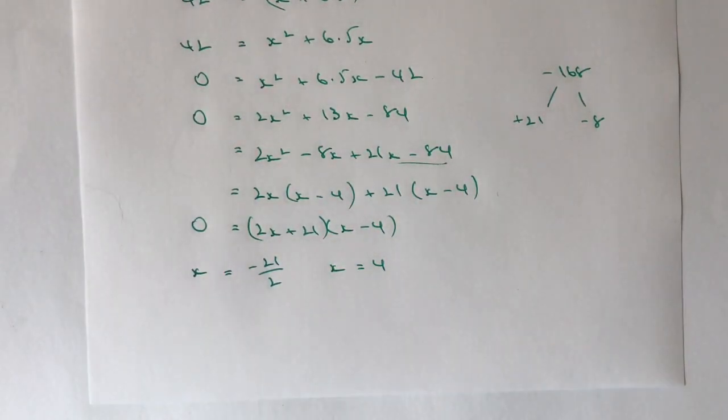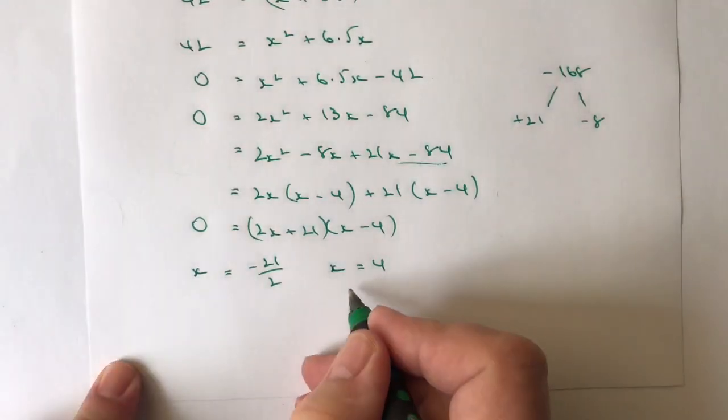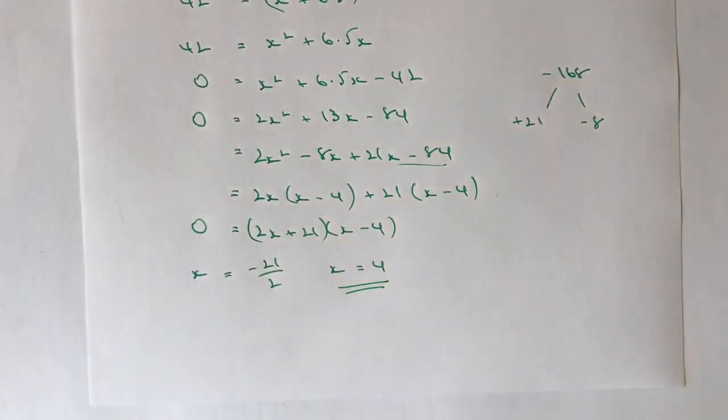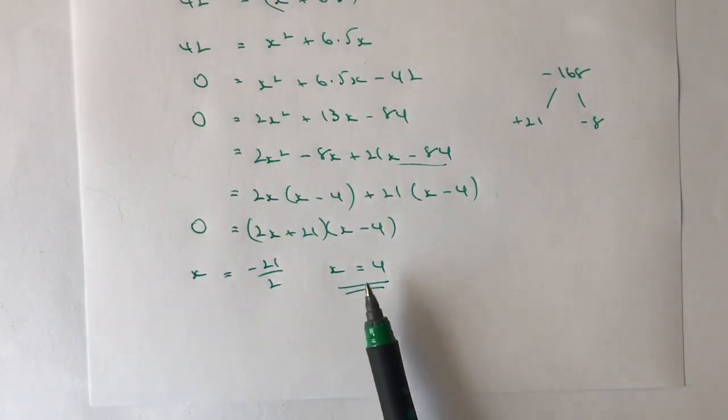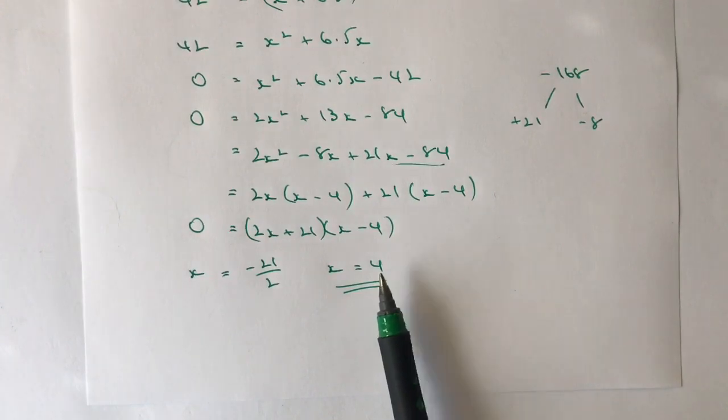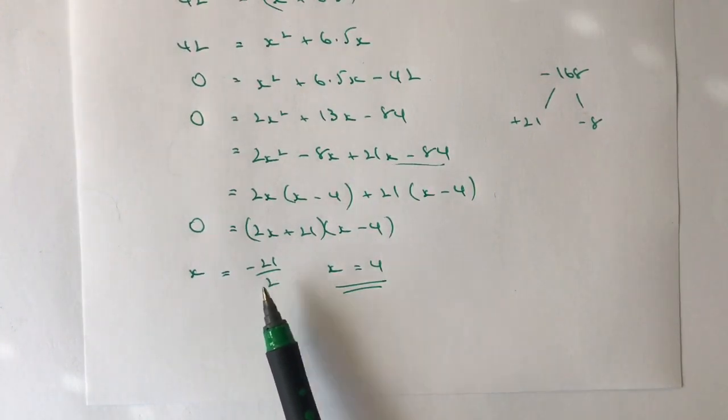Well, how do we know that it's a square number? Well, the only value of x here is going to be x equals 4 because it's a square number. But more importantly than that, it's a number that exists. This is a positive number. This one is a negative number, which doesn't exist.